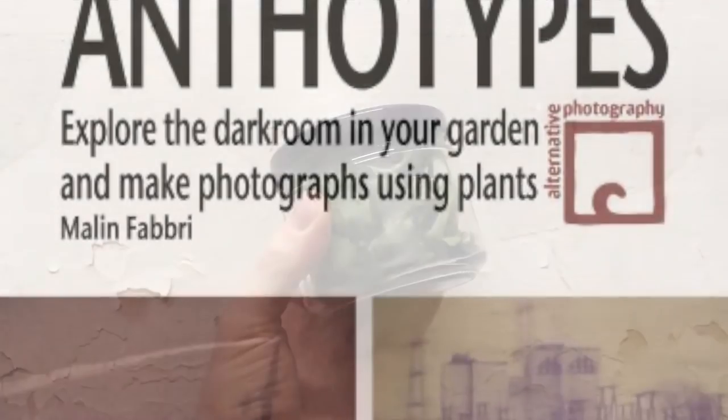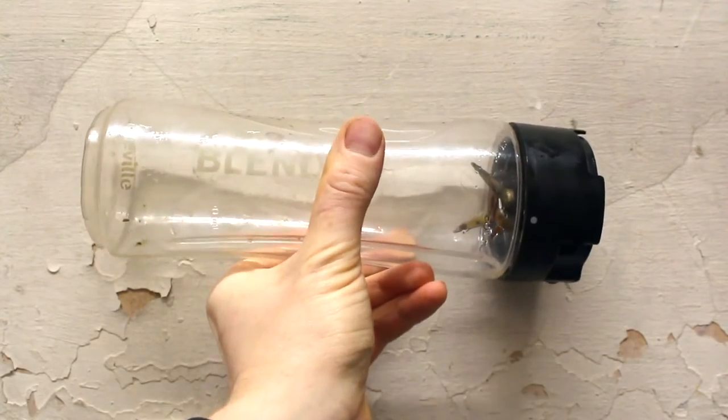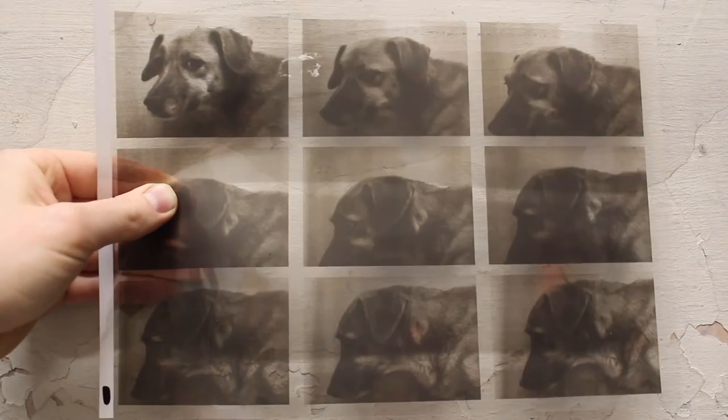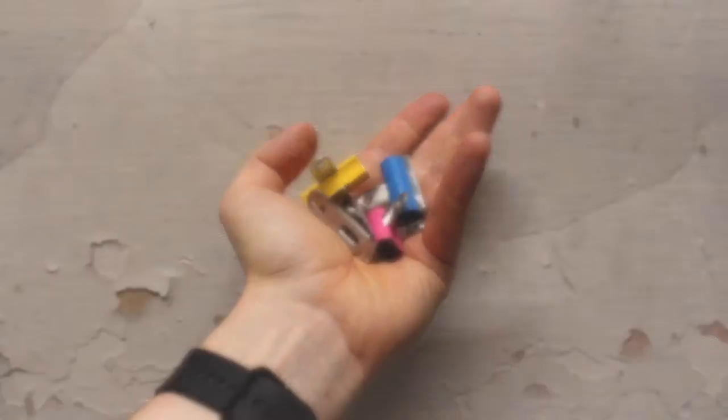But today you're going to need some plant material, a blender, pure alcohol or water, a cheesecloth, some strong paper, a paintbrush, a digital positive, two bits of glass or a frame, and some clips to hold it all together.